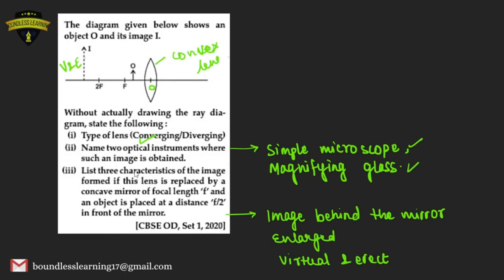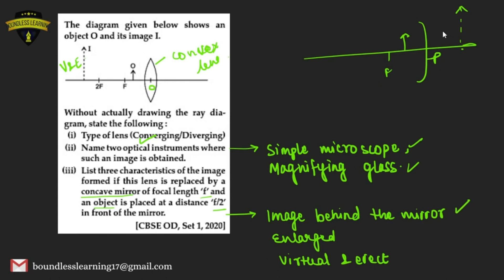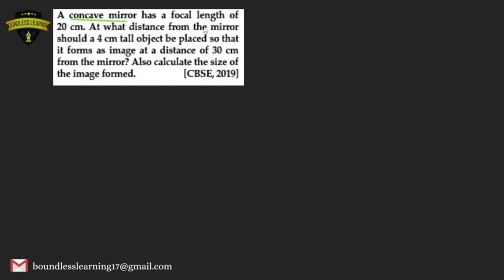Now, the characteristics of the image if this lens is replaced by a concave mirror of focal length f and an object is placed at a distance f/2. When the object is placed between the pole and focus of a concave mirror, the image is formed behind the mirror — it is enlarged, virtual, and erect.